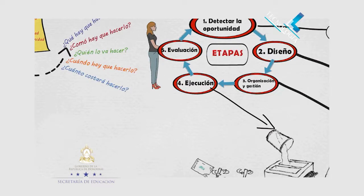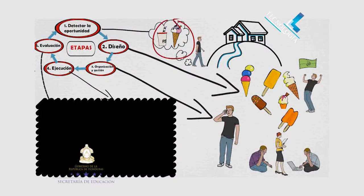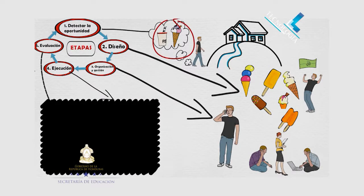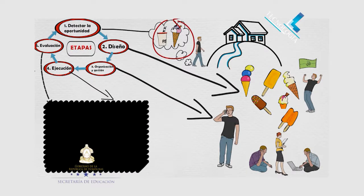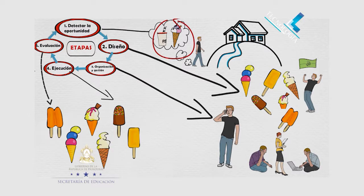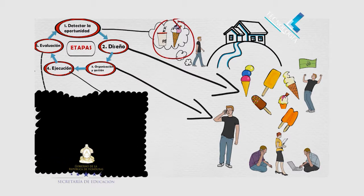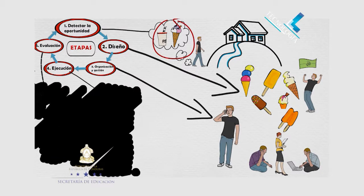Y la quinta y última etapa es la evaluación y el perfeccionamiento. Estamos llegando al final del proyecto. Casi al final. Aquí se realiza la revisión de todo el proceso del producto y los efectos del mismo, para que de esa manera podamos perfeccionarlo.